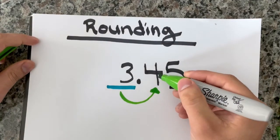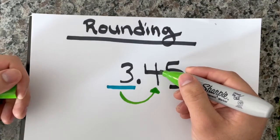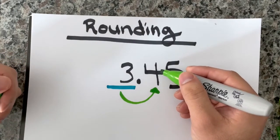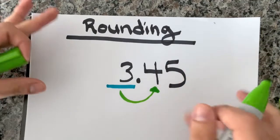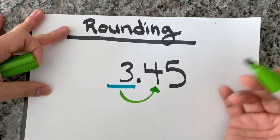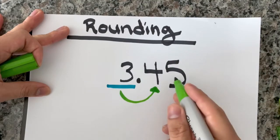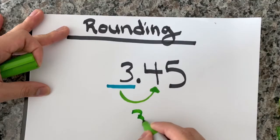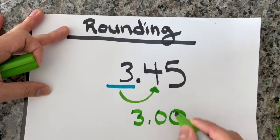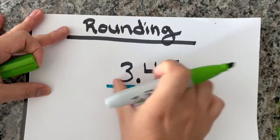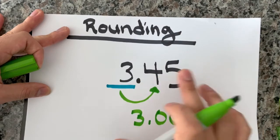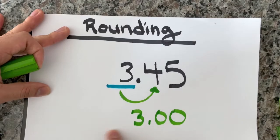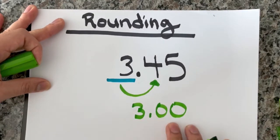So I see that I have a four. Now, you learned back in preschool or kindergarten that four comes before five. So four or less — we're going to let him rest. Everything else becomes a zero. So our new rounded number is three. Rounding $3.45 to the nearest whole number: $3.45 is closer to $3 on a number line than it is to $4, so we round to $3.